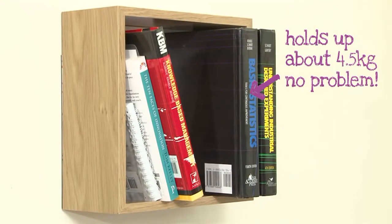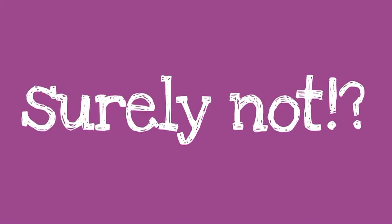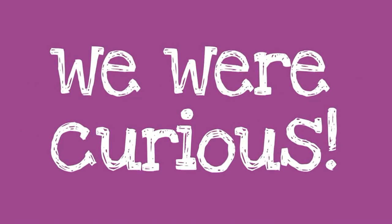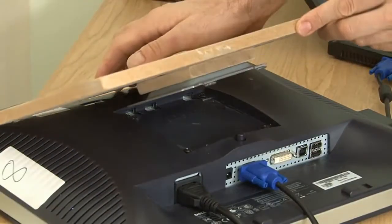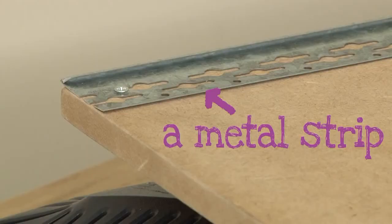Now at this point we were all getting a bit excited, and we thought surely a computer monitor wouldn't stay up. But curiosity got the better of us, so we gave it a go. We made a wall bracket to go on the back of the monitor, put a metal strip onto the top of the bracket, then got several strong magnets and popped them on the strip.